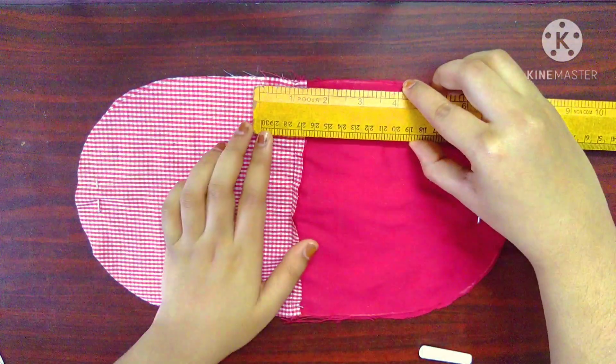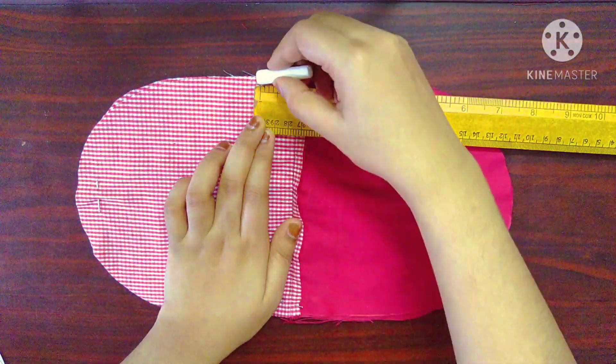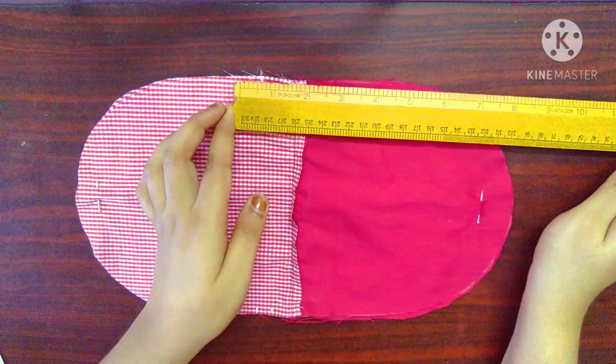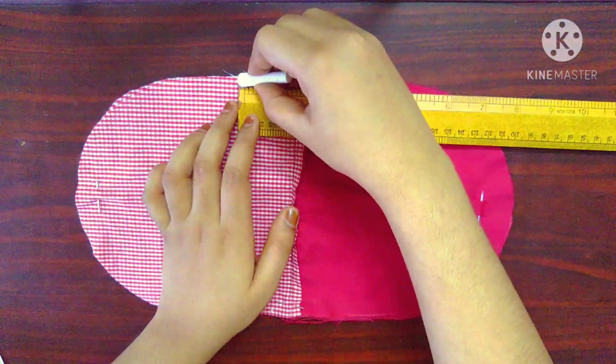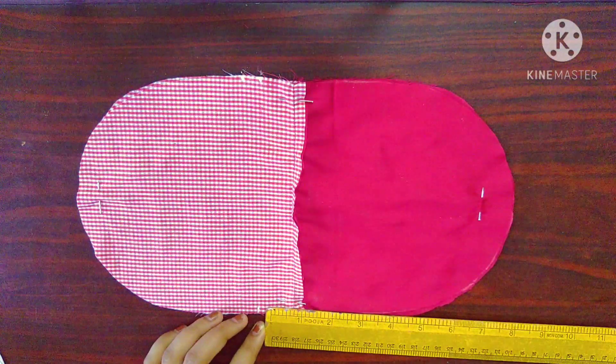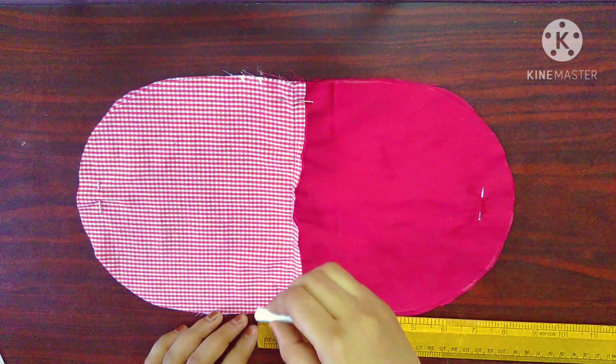I am going to mark a point on the main fabric 1 inch below the stitch and mark another point half inch or three-fourth of an inch from that first point. I will be repeating the same step on the other side as well.